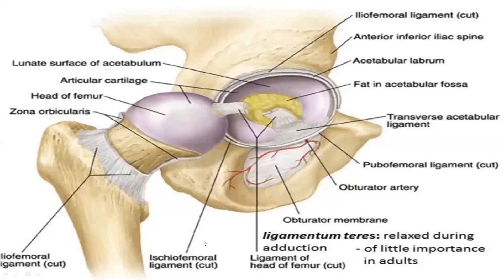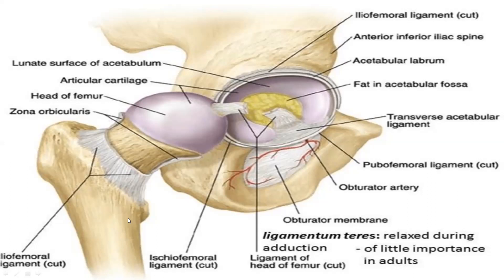The hip is a ball and socket type of joint. The socket is formed by the acetabulum of the pelvis, and the ball is contributed by the upper end of the femur. The joint is covered by various layers — synovial membrane, capsule, and various ligaments. Here you can see the acetabulum, the head, the neck, the trochanteric zone, and subtrochanteric zone, along with the various layers covering the joint.